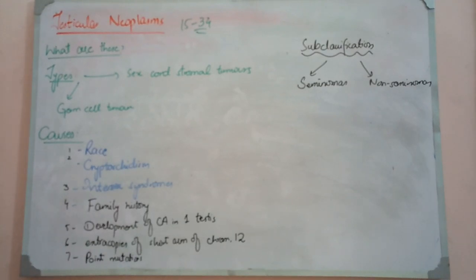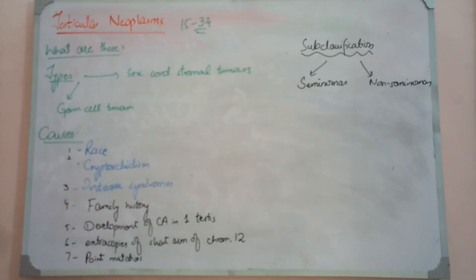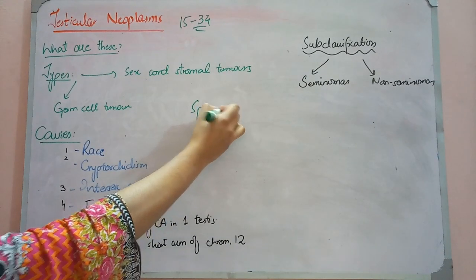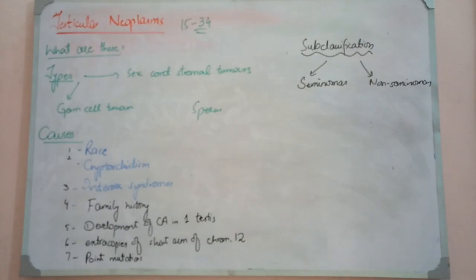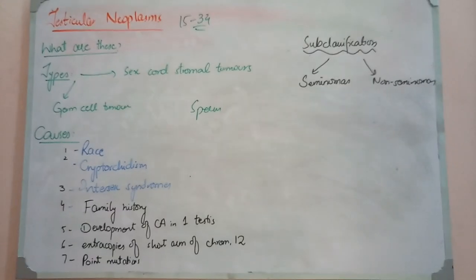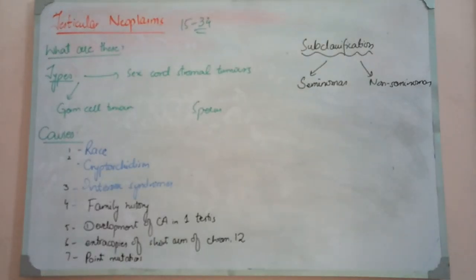Testicular cancers arise from two main cell types. When we study the testicular structure, the main function is sperm production. The testicular cells include germ cells and reproductive cells — the cells that produce sperm. In addition, there are associated helping cells.